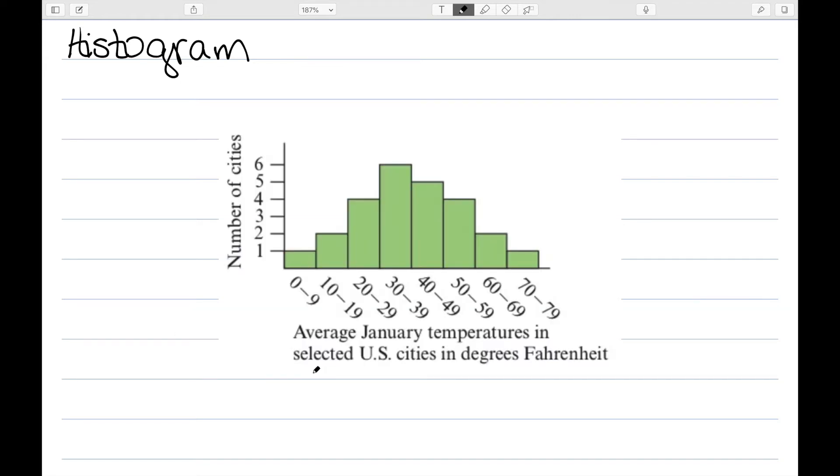Next we have a histogram. The histogram is a kind of bar graph, but the categories are individual numbers or equal length intervals of numbers. Just like I can think of fusing the pictures in a pictograph to make a bar graph, we can think of fusing the dots in a dot plot to make a histogram.